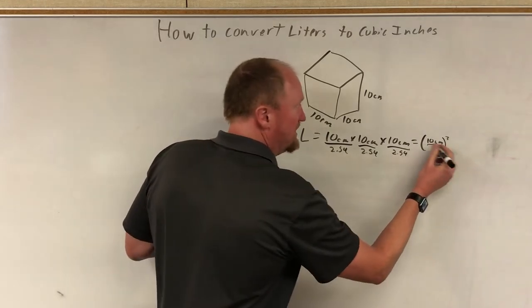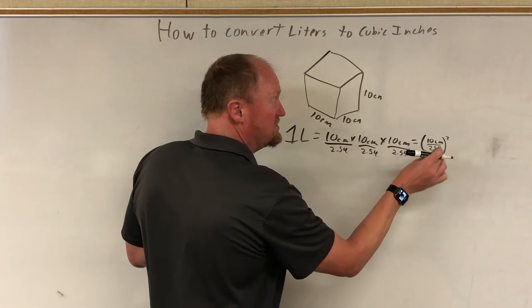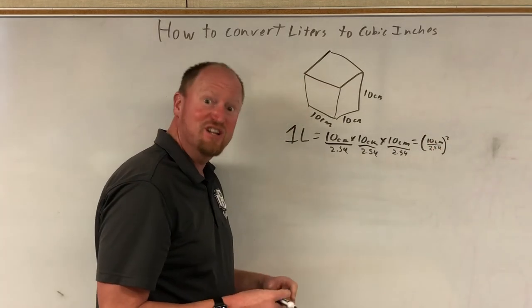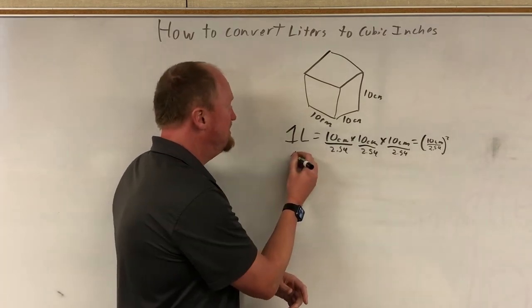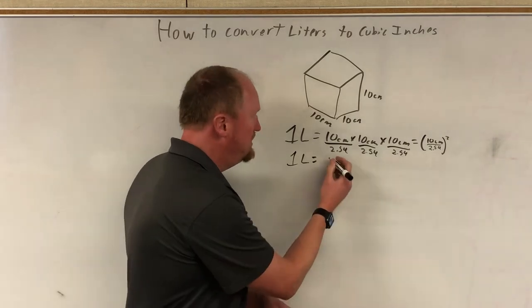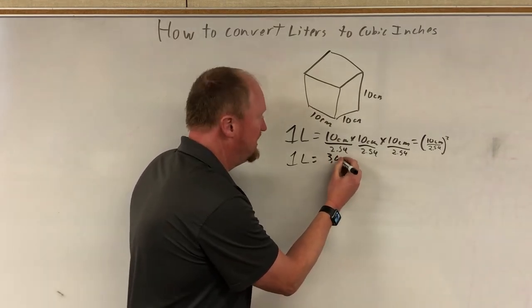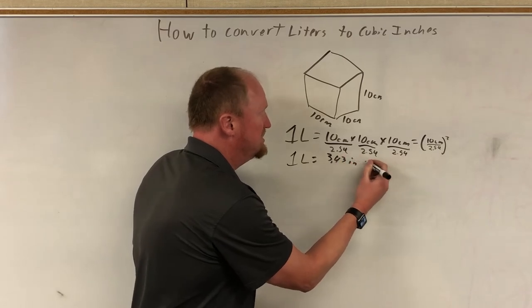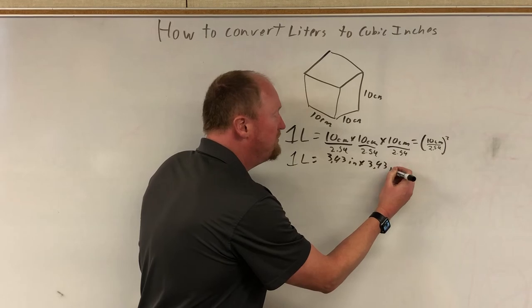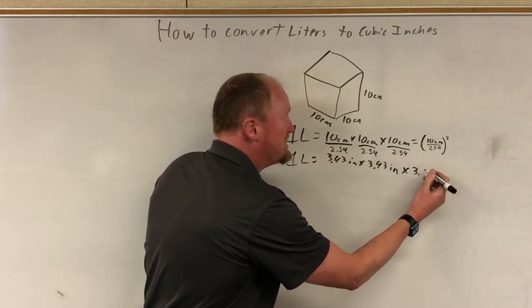And so, by the way, make sure if you're doing it that way that the 2.54 is inside the brackets or you're gonna get something really wrong. So you divide 10 by 2.54, you get something a little bit shy of 4—4 inches on each side. It's actually 3.93 inches times 3.93. Almost 4. And for most cases, 4 would be precise enough.